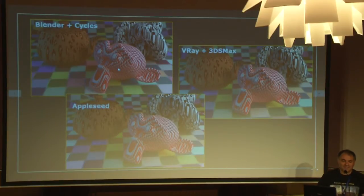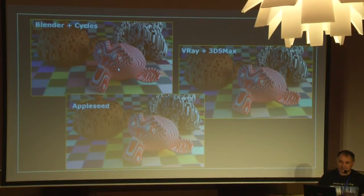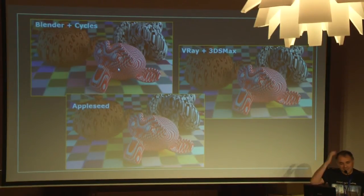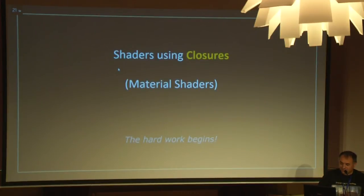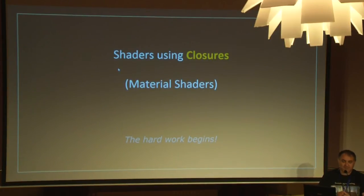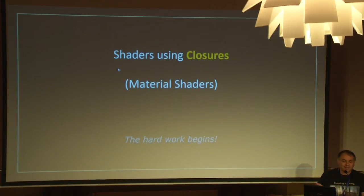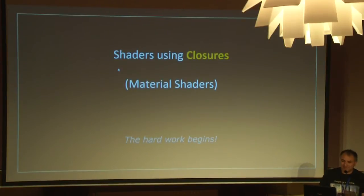The second case is when you are not doing a texture shader but a material shader — using closures. When you are using closures, you are writing directly to the renderer and have very, very specific rendering. The hard work begins. Each closure is different — even if you have the same name, it's not exactly the same between renderers. When you are doing a diffuse closure, it could be not the same source of diffuse for V-Ray or for Cycles. So you will not have the same result. It's very dangerous to work with it.